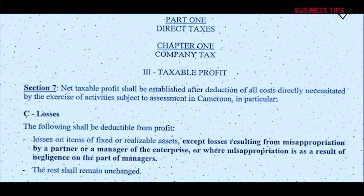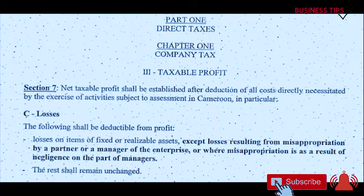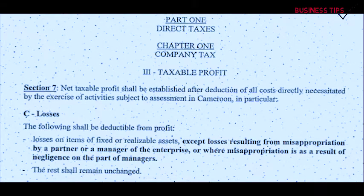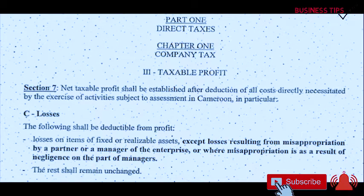The following shall be deductible from profit — that's Article 7, Subsection C: losses on items of fixed or realizable assets, except — please take note of this word, a lot of people are going to fall in the hands of the tax people — except losses resulting from misappropriation by a partner or a manager of the enterprise, or where misappropriation is as a result of negligence on the part of managers. The rest shall remain unchanged. So as you can see, they actually brought an addition to Article 7c and the rest of that article remains unchanged.